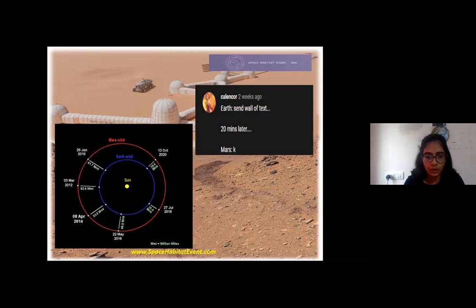The Mars window for space launches is about two years because the Earth and Mars distance varies quite a bit during that time.